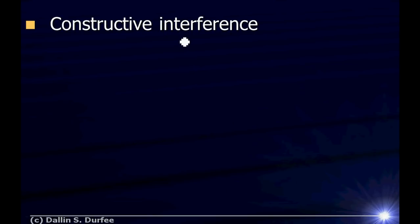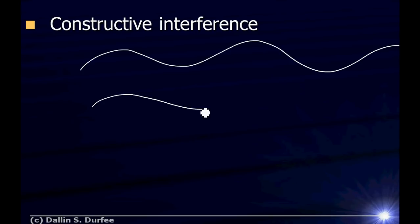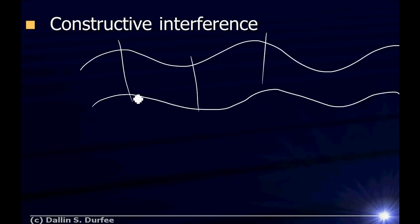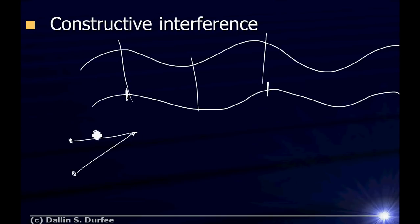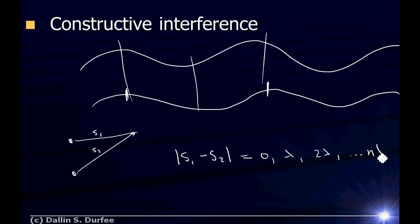If I have two sine waves that are in phase with each other — both go up at the same time, both go down at the same time — I get constructive interference, and they add together to make a big wave. If I shift one wave by one wavelength, I still have constructive interference. So constructive interference happens when the difference in the two distances traveled — calling them S1 and S2 — the absolute value of that difference is equal to zero, one wavelength, two wavelengths, or any integer number of wavelengths m·λ. Those two waves add together to make a big wave.